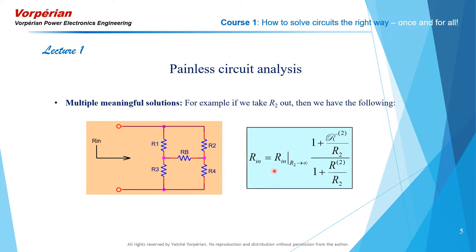In the EET, you will have to determine the input resistance with R2 taken to infinity, and then you will determine the resistance looking back into the circuit from port 2 — where R2 was connected — with the input port shorted. Then you look back into the circuit from port 2 and determine the resistance with the input port open. I will show you now each one of these steps.